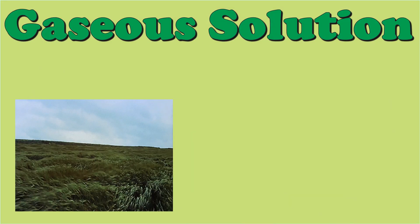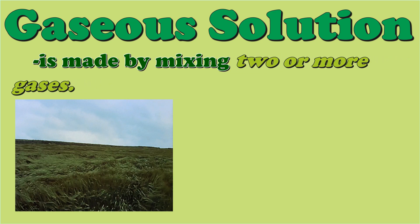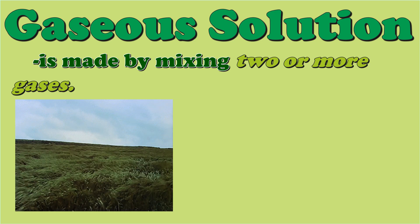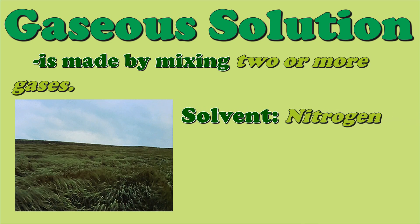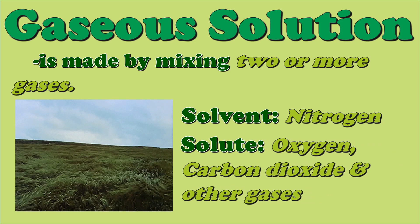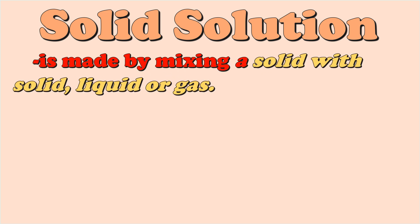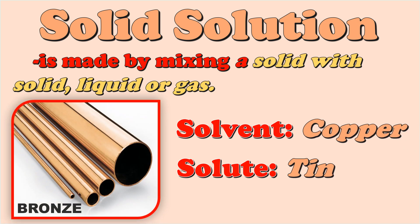A gaseous solution is made by mixing two or more gases. Air is an example of a gaseous solution — the solvent is nitrogen, and the solutes are oxygen, carbon dioxide, and other gases. A solid solution is a solution made by mixing a solid with solid, liquid, or gas. For example, bronze — a combination of copper and tin, where the solvent is copper and the solute is tin.